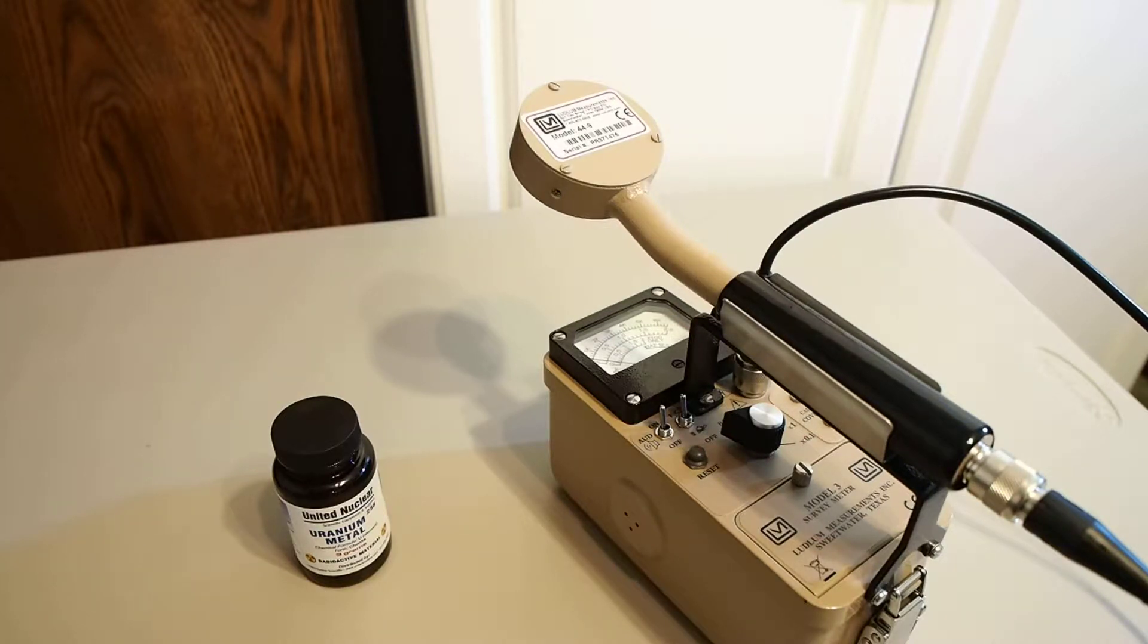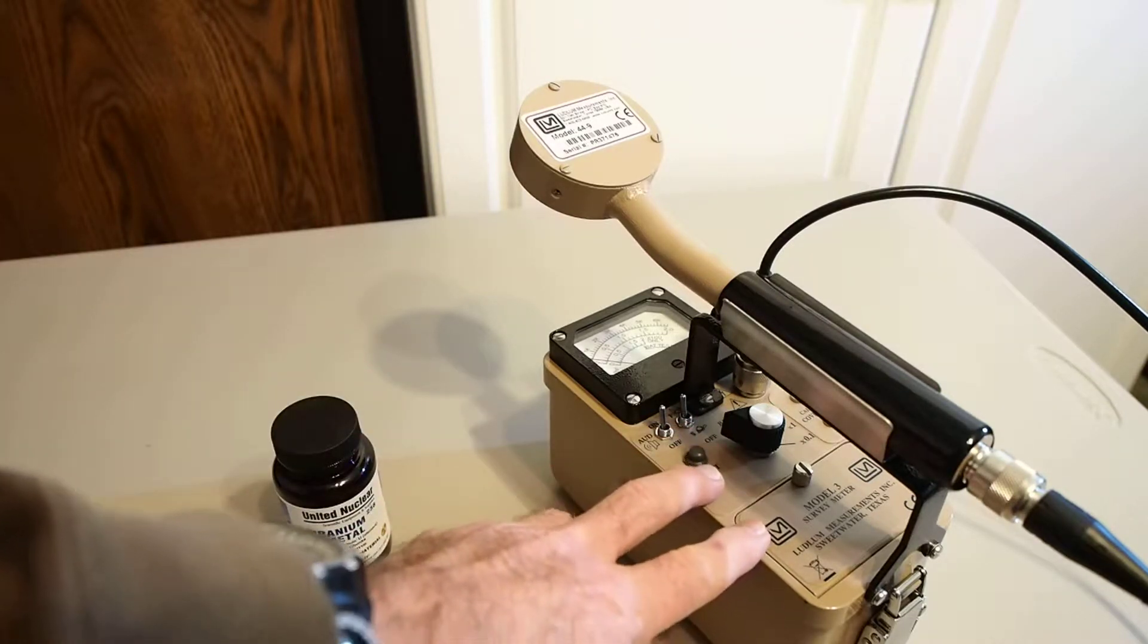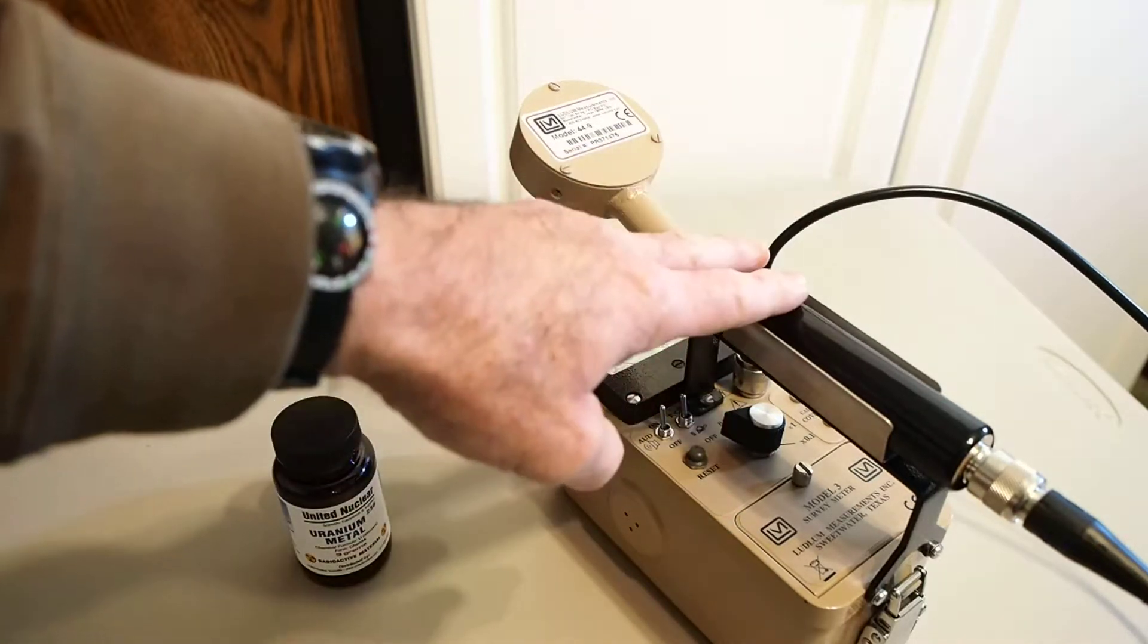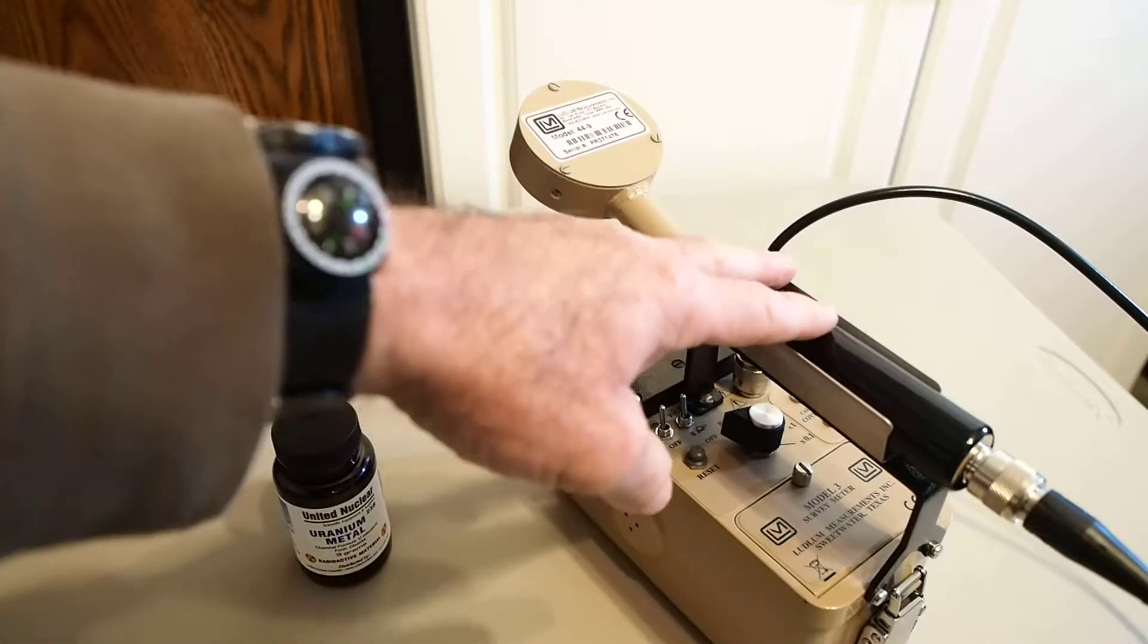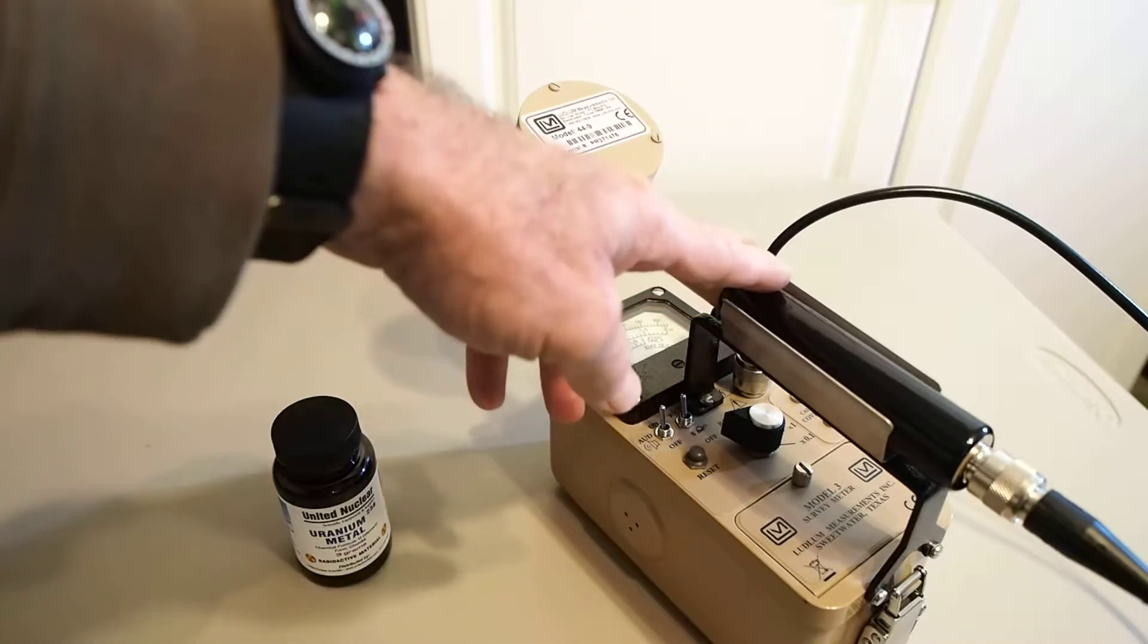We'll be measuring a small quantity of uranium metal. This Ludlum Measurements Incorporated Model 3 survey meter has an attached Model 44-9 GM detector which detects alpha, beta, and gamma radiation.